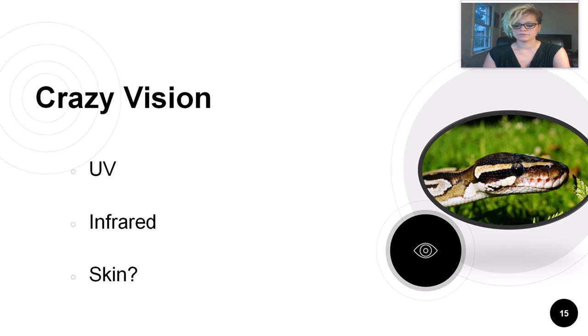Ultraviolet is not the only special spectrum some companions can use. Many snakes can sense infrared light through pits on their face — infrared radiation is emitted from warm objects like a mouse's body, so even in pitch darkness a snake could still detect them. They do not sense this radiation through their eyes; they have special pits on the side of their faces that use special proteins to detect infrared. Snakes are not the only animals who can sense with parts of their body other than their eyes — some amphibians can detect light through their skin and can even regenerate parts of their eye if damaged.